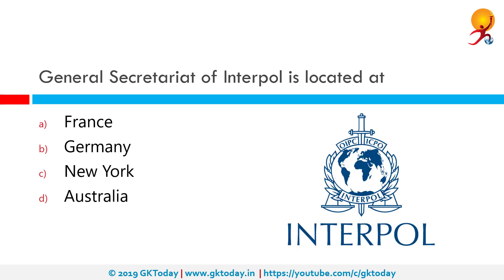The General Secretariat of Interpol is located where? The correct answer is France. The International Criminal Police Organization, often known as Interpol, is the international organization that facilitates international police cooperation. It was established as the International Criminal Police Commission in 1923, chose Interpol as its telegraphic address in 1946, and made it its common name in 1956.